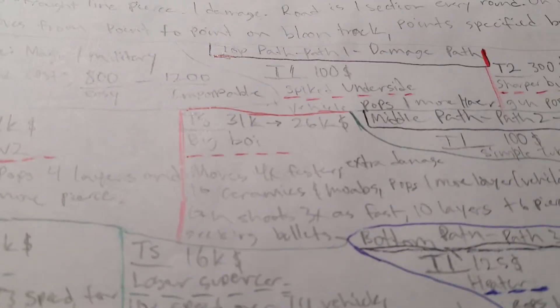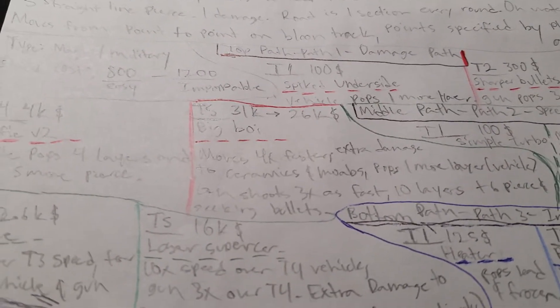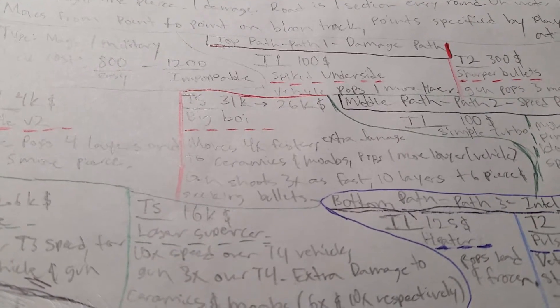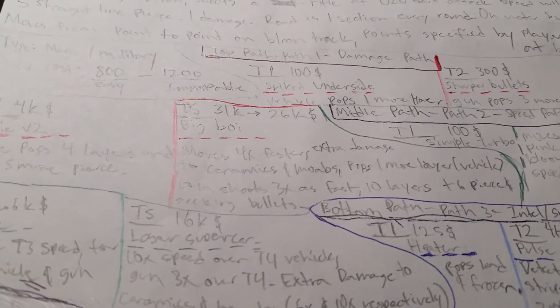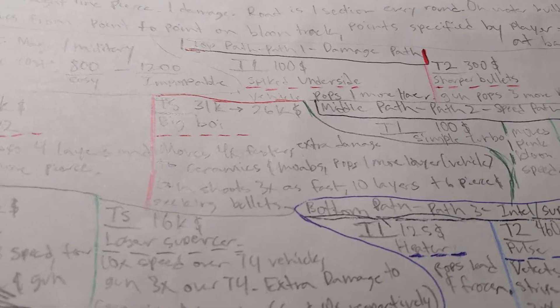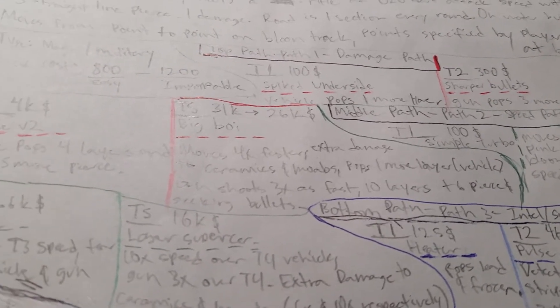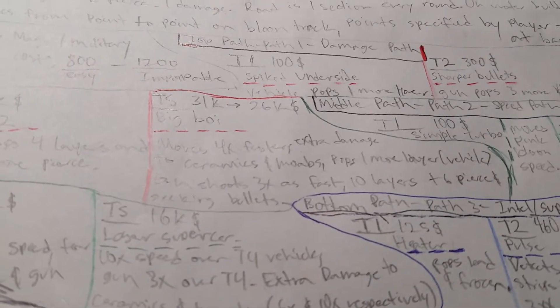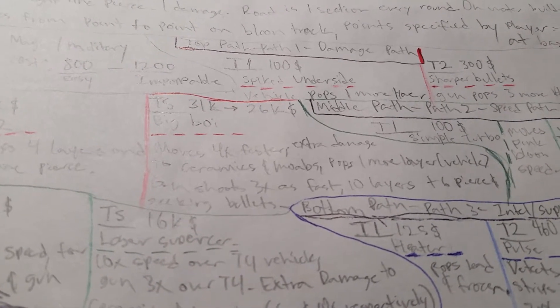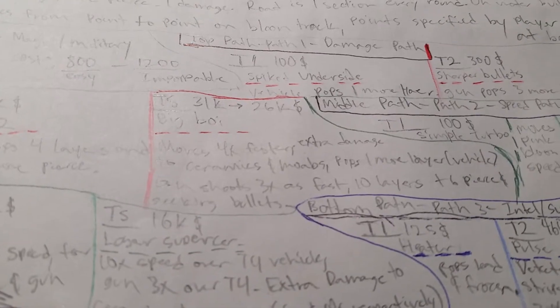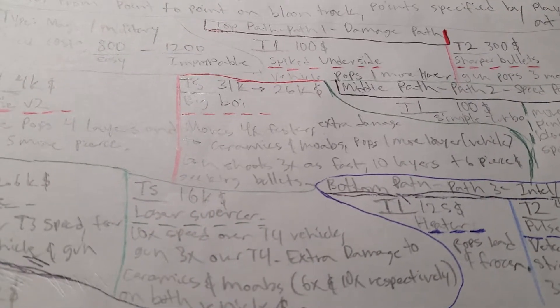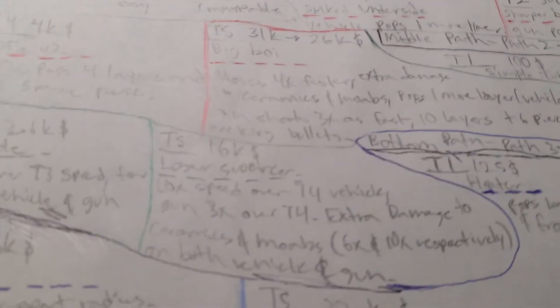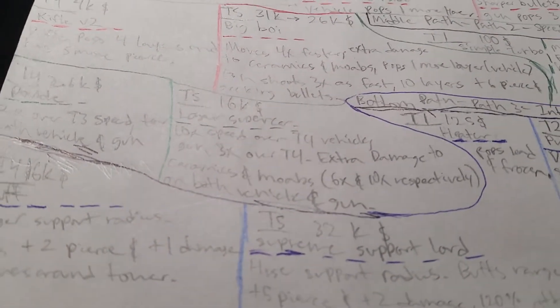Tier 5, 31K or 26K or somewhere in the range of that, big boy. Vehicle moves four times faster, extra damage to ceramics and MOABs, pops one more layer for vehicle, and then gun shoots three times as fast with ten more layers and six more pierce and seeking bullets.